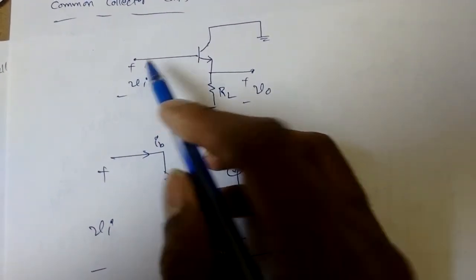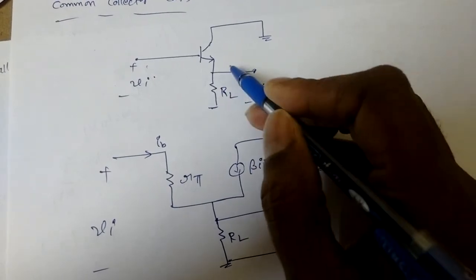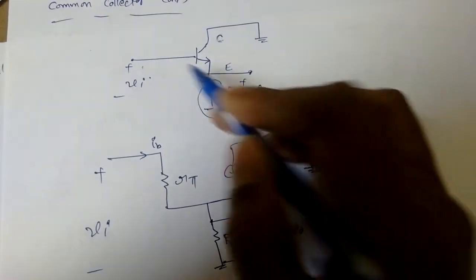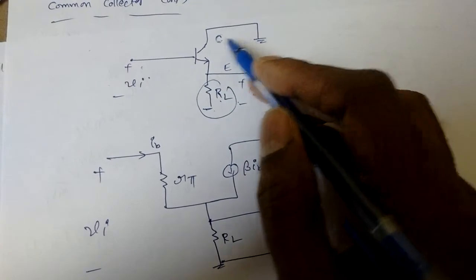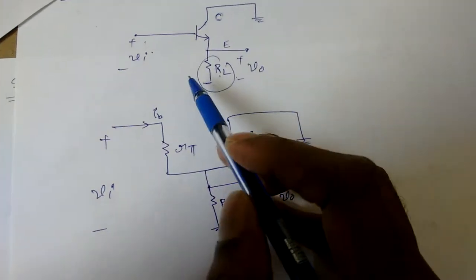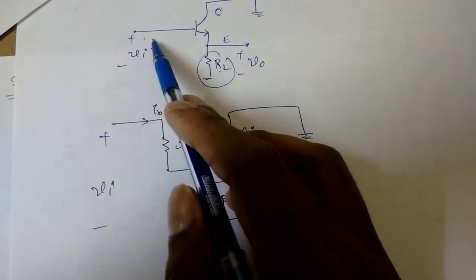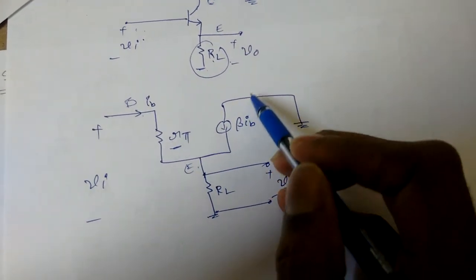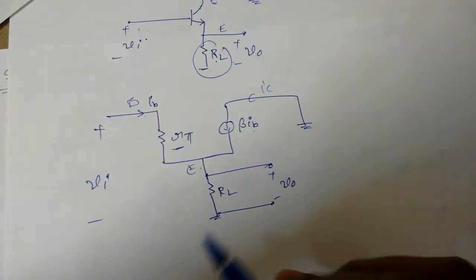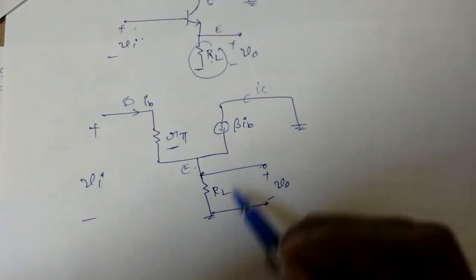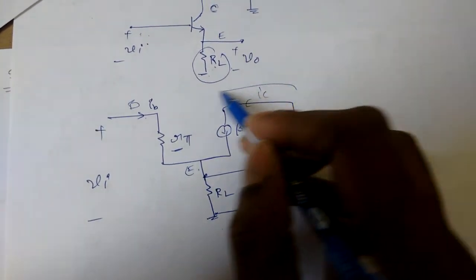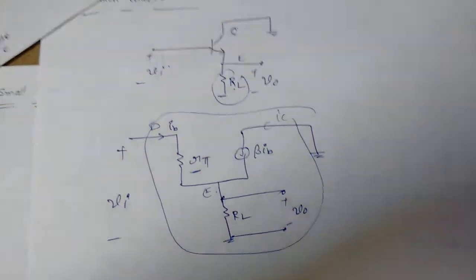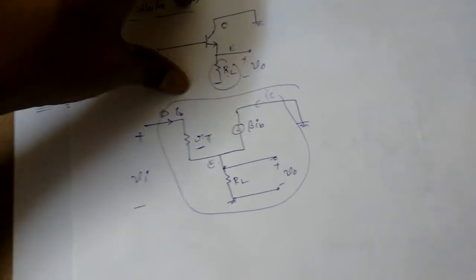Similarly, for the common collector configuration, input is given at the base and output is taken at the emitter — the load resistance r_e — while the collector is common to both input and output, hence called common collector. Previously we saw that when input is given to the base, there is r_pi between base and emitter. The collector current is beta times i_b, and at the emitter there is a resistance grounded where we take V_out. For common collector, we also use the pi model to find amplifier parameters.